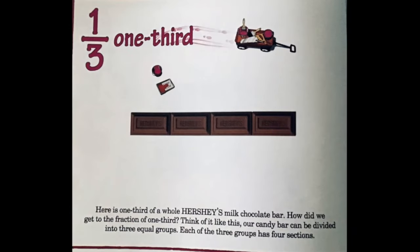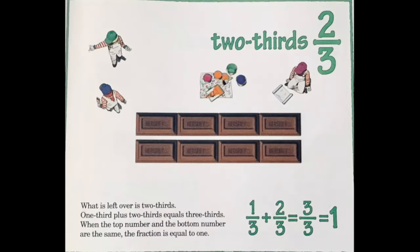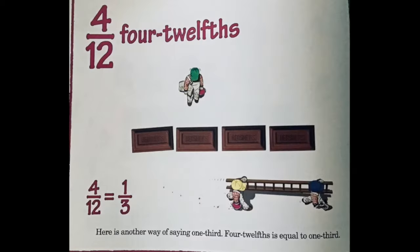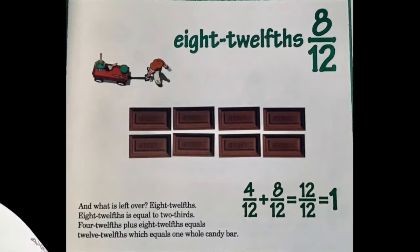Here is one third of a whole Hershey's milk chocolate bar. How did we get to the fraction one third? Think of it like this: our candy bar can be divided into three equal groups, and each of the three groups has four sections. What is left over is two thirds. One third plus two thirds equals three thirds. When the top number and the bottom number are the same, the fraction is equal to one. Four twelfths is equal to one third, and eight twelfths is equal to two thirds. Four twelfths plus eight twelfths equals twelve twelfths, which equals one whole candy bar.